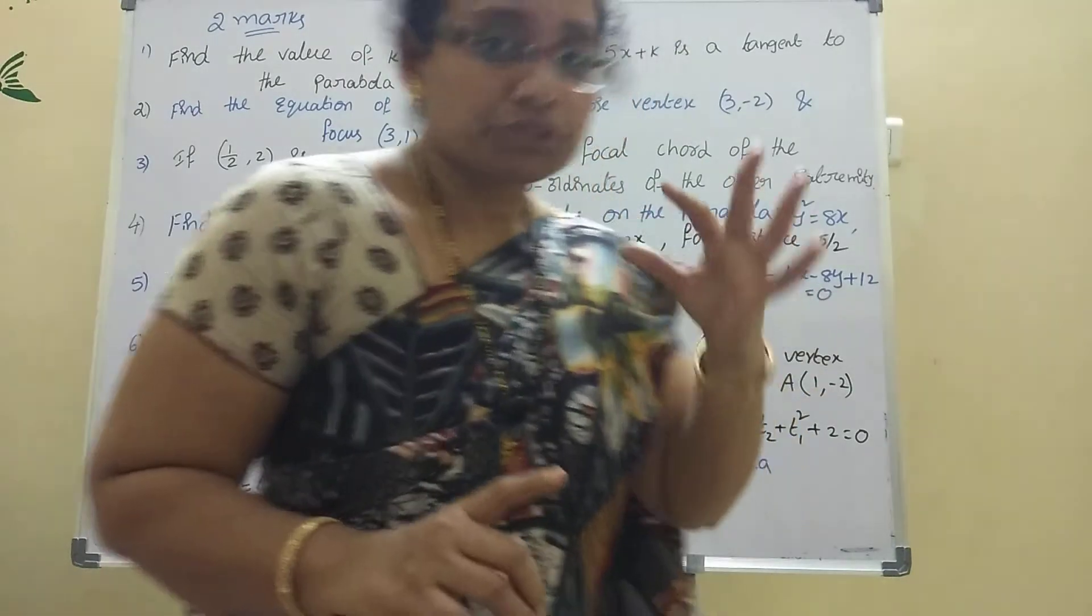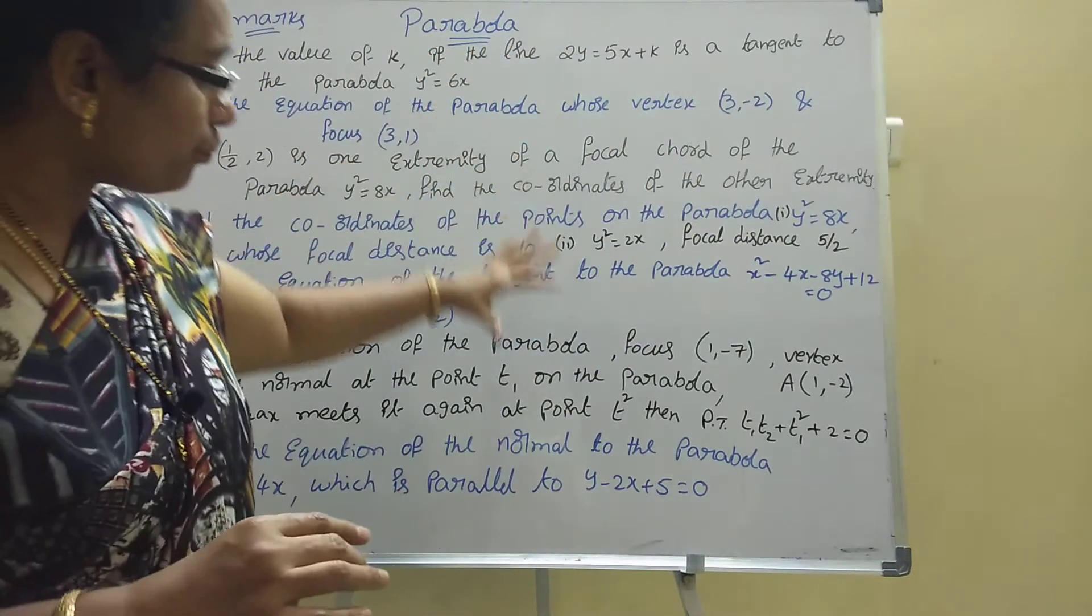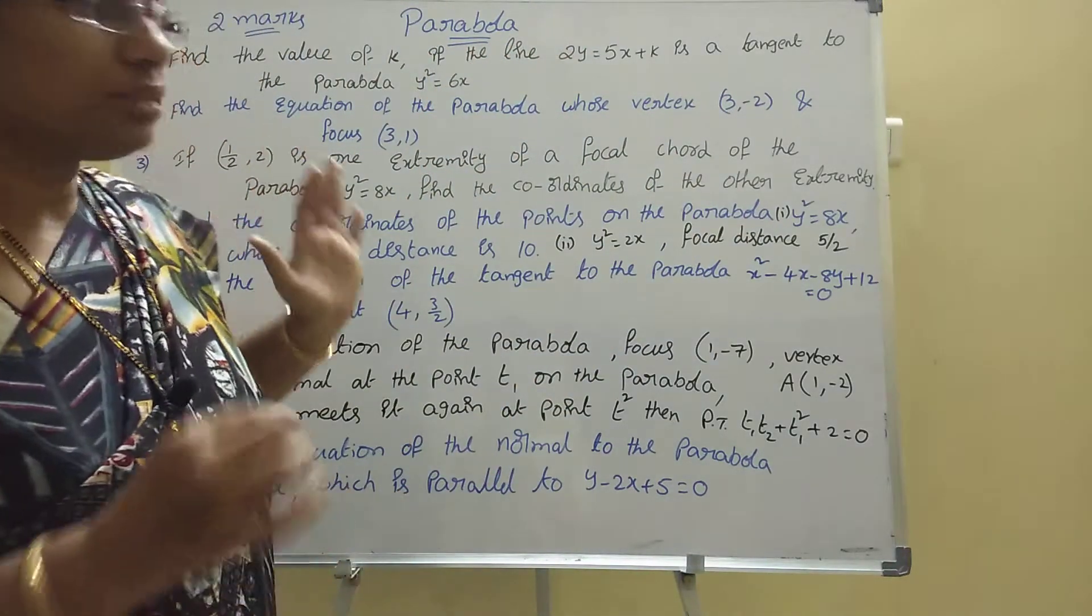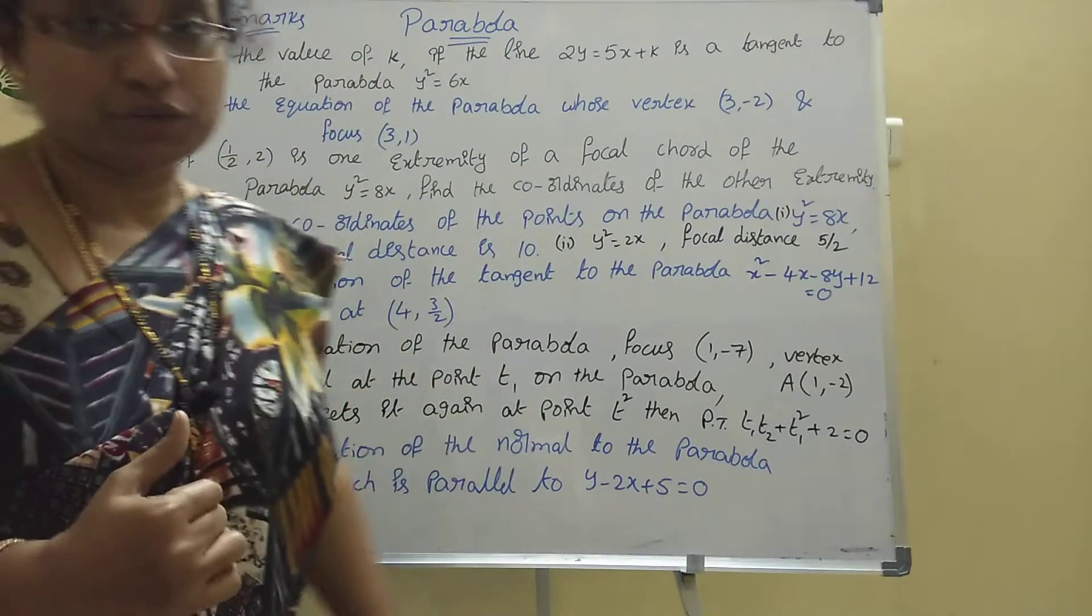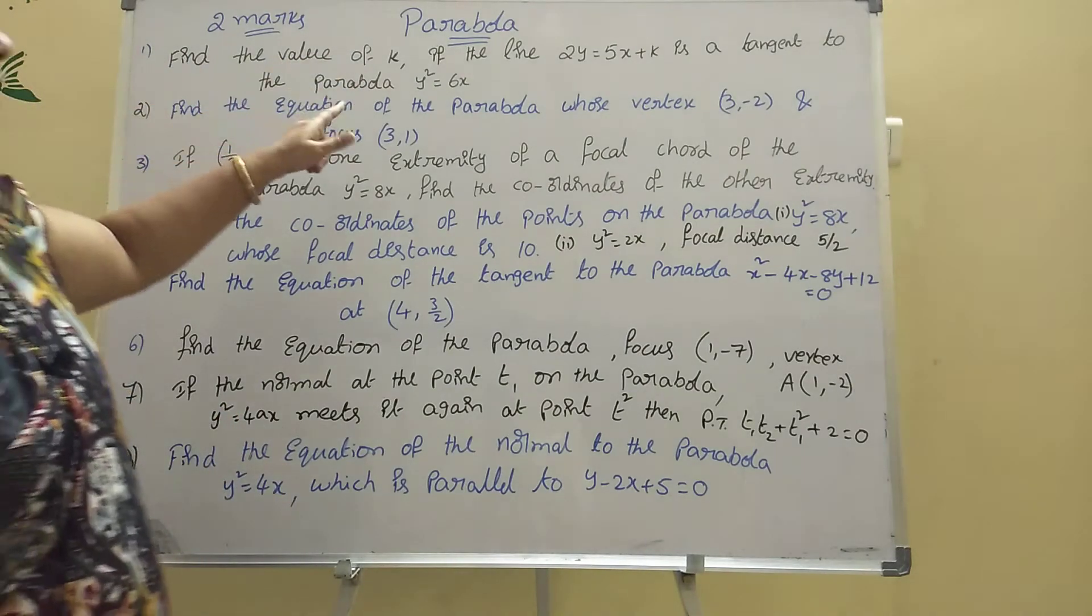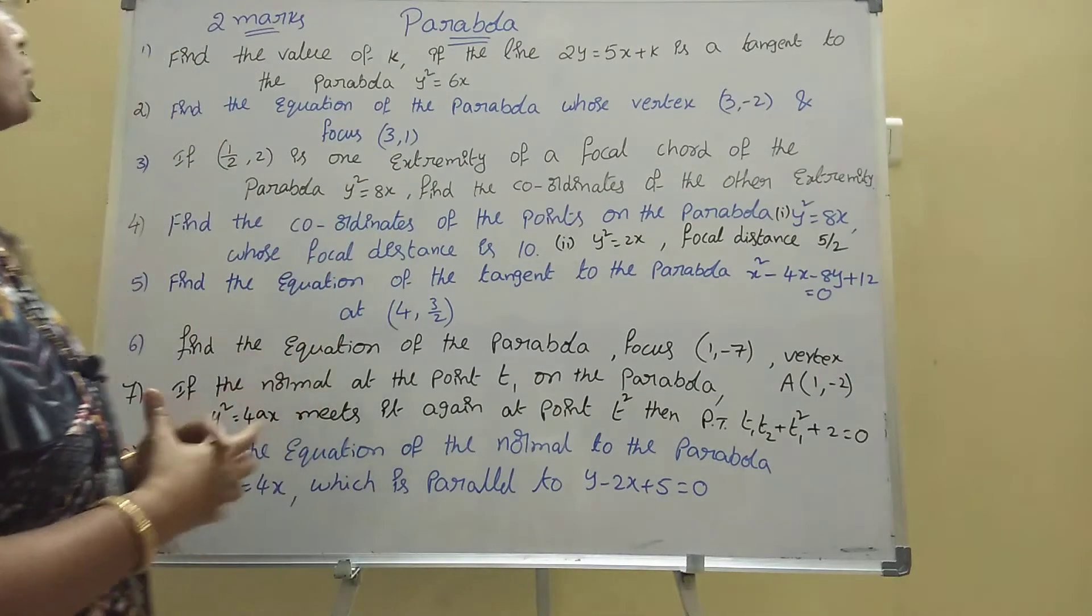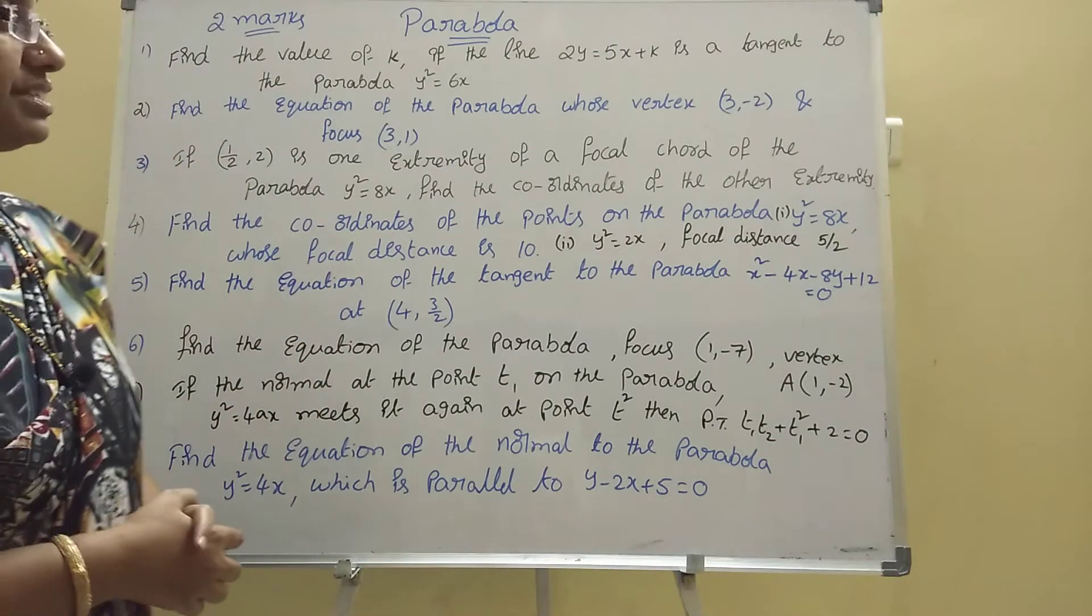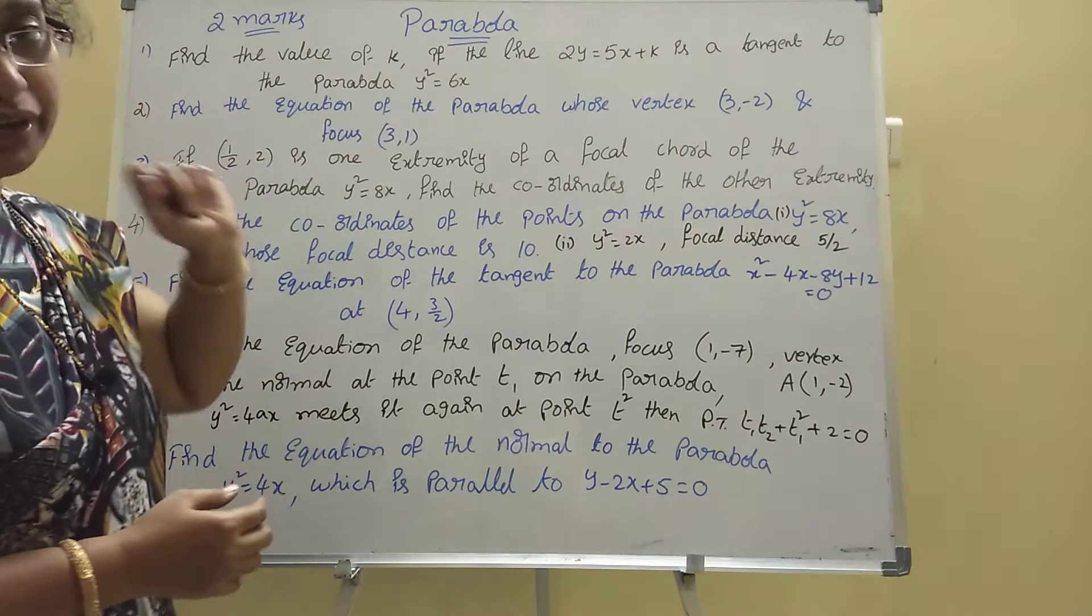First, two marks important questions I wrote here. This is a very important question, so I'm sure it will come. Two marks parabola: find the value of k if the line 2y = 5x + k is a tangent to the parabola y² = 6x. This is the important form, you should find the value of k.